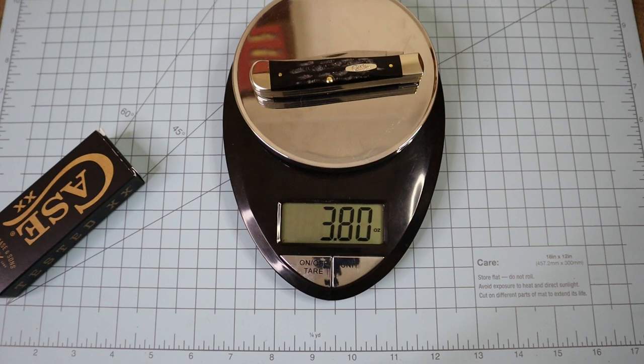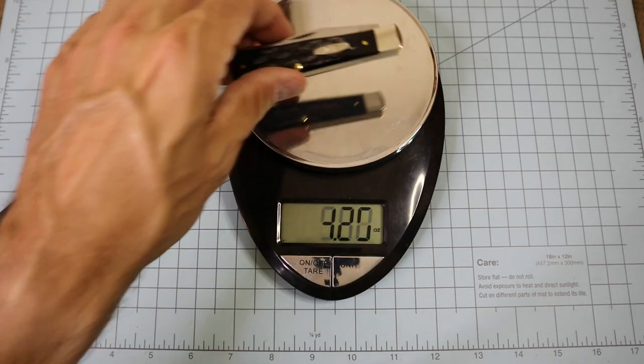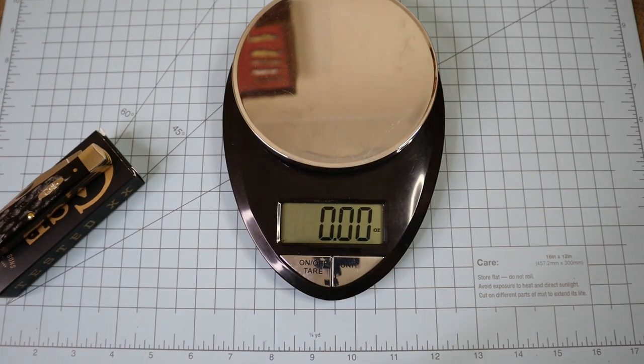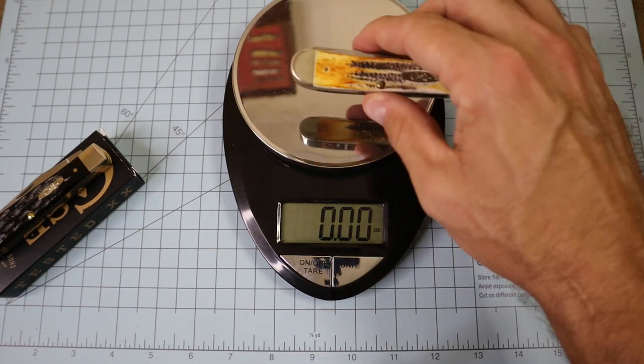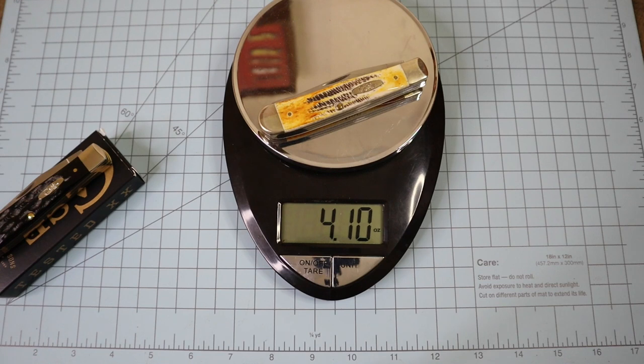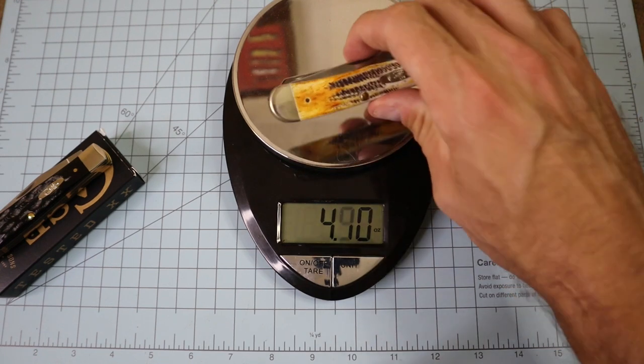Now this knife right here is 3.8 ounces, so it is below that ounce per inch that everyone likes for it to come in under. Now I wouldn't be right if we didn't compare it to - let's put some bone stack up there. That's 4.1, comes in right at your ounce per inch.